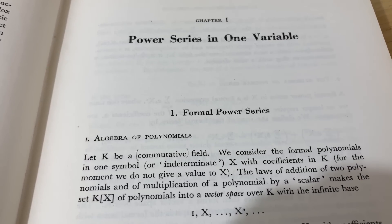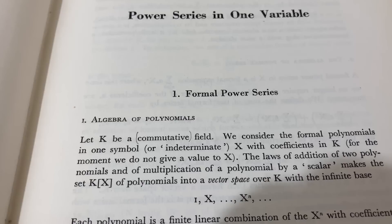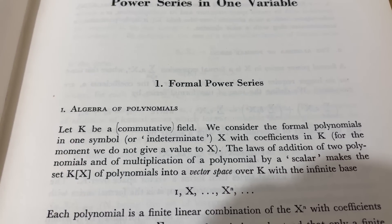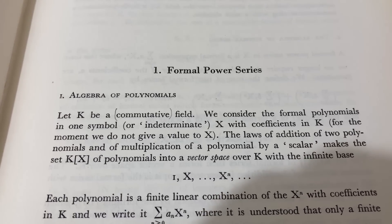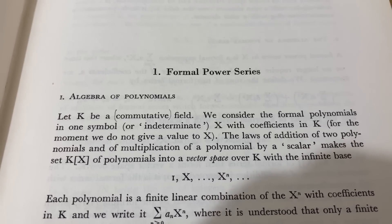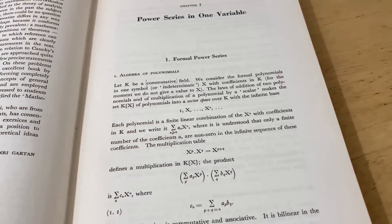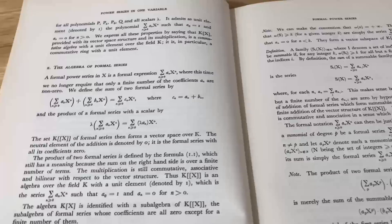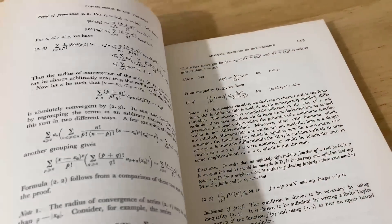This book is intense. Let me just show you how it starts so you can see how intense it is. So this is actually chapter one of this book. Formal power series, algebra of polynomials. Let k be a commutative field. We consider the formal polynomials in one symbol or indeterminate x with coefficients in k. For the moment, we do not give a value to x. Just right away, there's no 'this is a complex number, this is the real part, this is the imaginary part.' No, no, no.